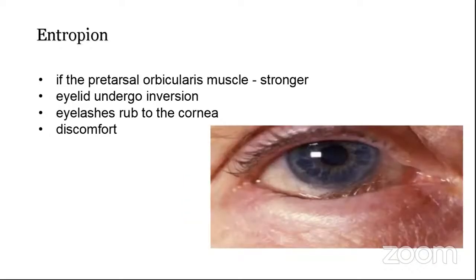The next condition is entropion. 'Ecto' means outside, 'ento' means inside — so in entropion, the eyelid turns inward. If the pretarsal orbicularis muscle, which is responsible for closing the eyelid, is stronger, the eyelid may undergo inversion. When it turns inward, it causes the eyelashes to rub against the cornea, and the patient will feel discomfort.